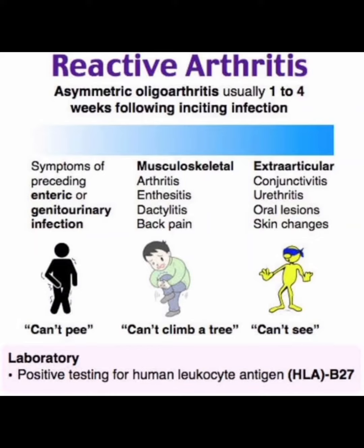Assalamu alaikum, dear doctors. In this video, I am discussing about Reactive Arthritis. What is Reactive Arthritis? That is an asymmetric oligoarthritis, usually 1 to 4 weeks following an inciting infection. Reactive Arthritis is an acute condition, and when it develops after any infection, there is sudden oligoarthritis — that is limping of the child — and that is Reactive Arthritis.